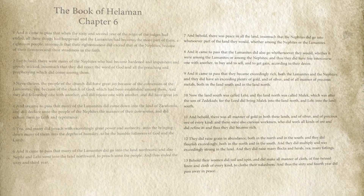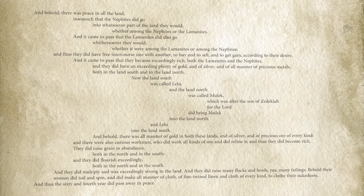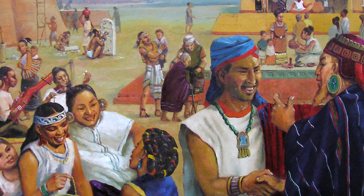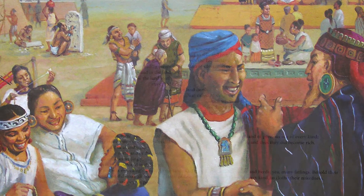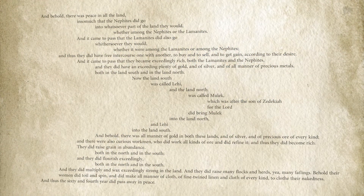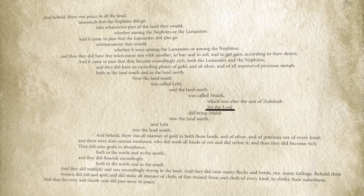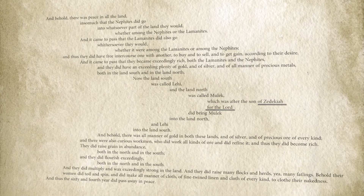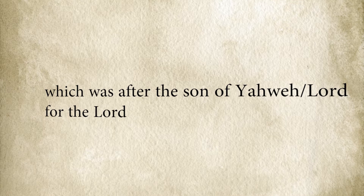Helaman chapter 6 verses 7 through 13 is another one of the four statistically strongest chiasms in the Book of Mormon. This passage reports on the 64th year of the reign of the judges — a year that signaled a significant turning point in Nephite history with increased prosperity, free travel, and peace between the Nephites and Lamanites. Most remarkable, the parallel terms at the center are 'Lord' and 'Zedekiah.' In Hebrew, the name Zedekiah included the abbreviated form of Yahweh, or Lord. Thus, the center of this chiasm would have worked better and been more obvious in Hebrew.